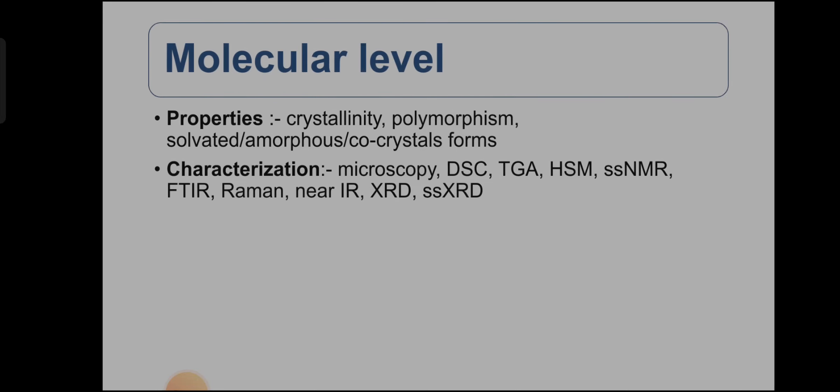So let's start with the molecular level. The name itself explains that it is something related to the molecules. If molecular arrangement is in 3D form, then it is crystalline. And if it is not in 3D form or it is in disorder form, then it is amorphous.